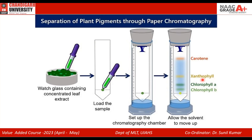Through time, science becomes more refined, and now we have specific standards for separating molecules. To separate any molecule, we need two things: a stationary phase — the phase that doesn't move, like the paper — and a mobile phase that will move the components, like the water. The mobile phase contacts the stationary phase and moves the sample through it, causing separation. These are the components of an ideal chromatography setup: a stationary phase, a mobile phase, and a sample.